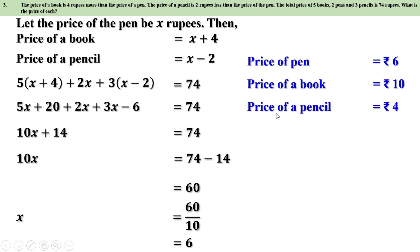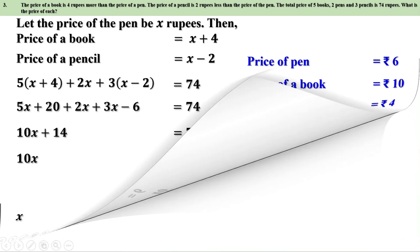Verification: 5 books = 50 rupees, 2 pens = 12 rupees, 3 pencils = 12 rupees. 50 + 12 + 12 = 74. The answer is correct.